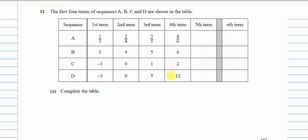Before we start, for the nth term, remember it's a formula which has n, and then there is some number which multiplies with n, and then plus or minus another number. This is our nth term, where n can be just n or it can be n squared.